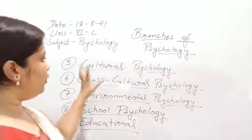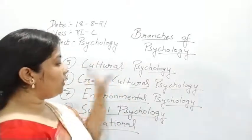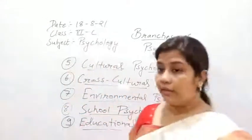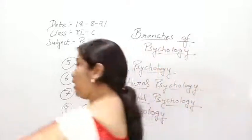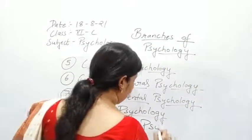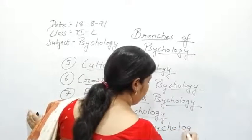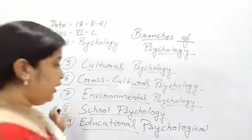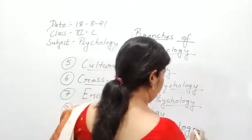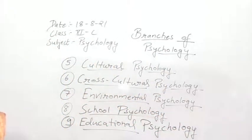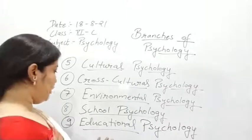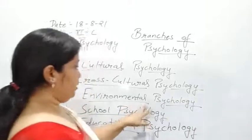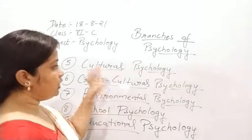People who work in a particular field of psychology are known as psychologists by that name. Those in educational psychology are educational psychologists; those in school psychology are school psychologists; those in environmental psychology are environmental psychologists; and those in cross-cultural and cultural psychology are called cross-cultural and cultural psychologists respectively.